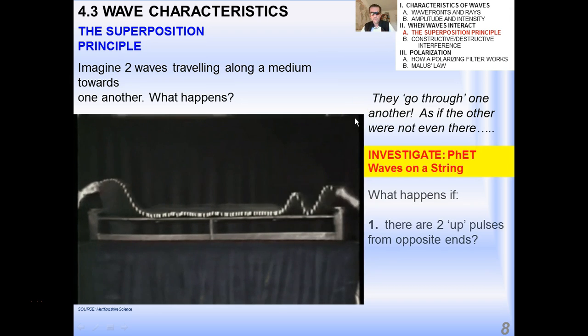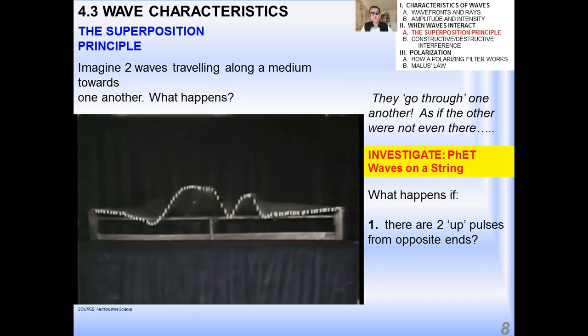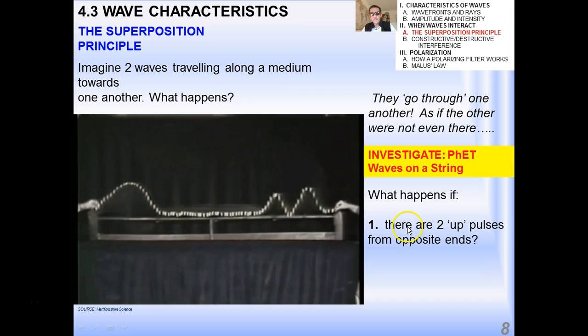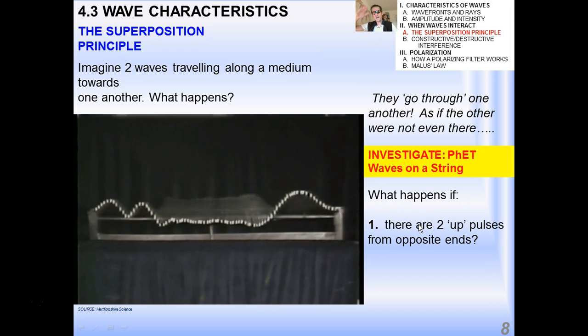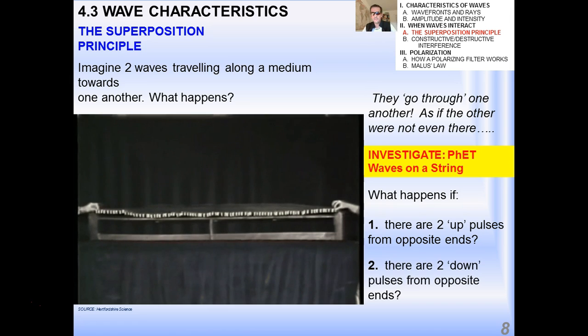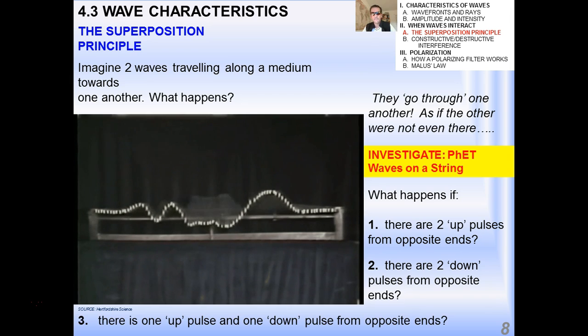Now if you look at this really cool wave generator here, this is a bunch of metal bars on a thin wire right down the center. So we can give wave pulses from either end, and you can see what happens when the waves meet in the middle is these two waves pass right through that one big wave as if the other wave was not even there. And that's a very important consideration when we talk about how waves interact.